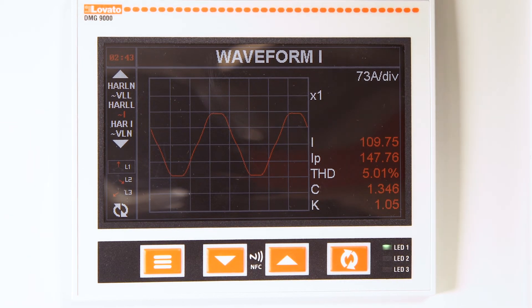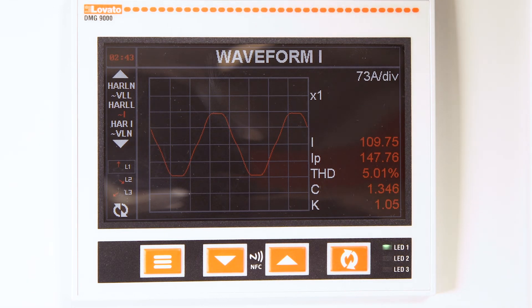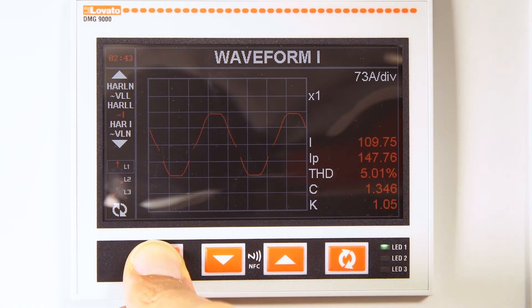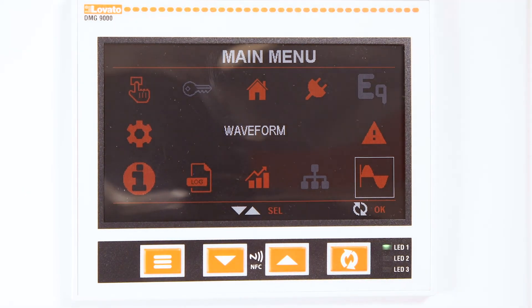The standard k-factor values that transformers are built with are 4, 9, 13, 20, 30, 40, or 50.